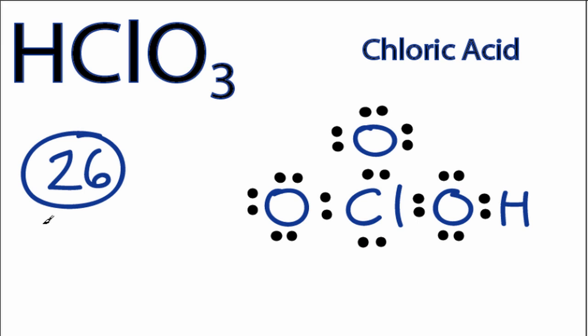So we've used all 26 valence electrons. All of the oxygens and chlorines have 8 valence electrons. Their outer shells are full, and the hydrogen has 2 valence electrons. Its outer shell is full. So this looks like a good structure for HClO3.